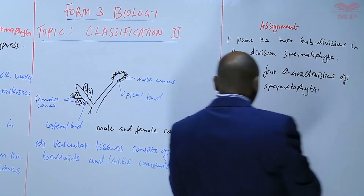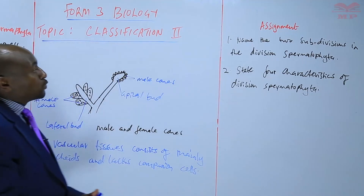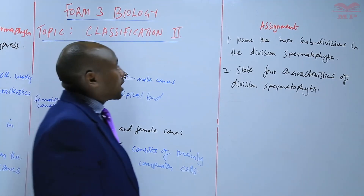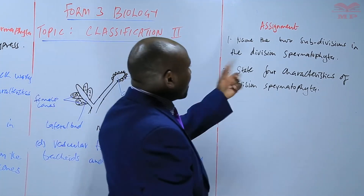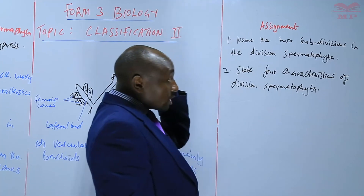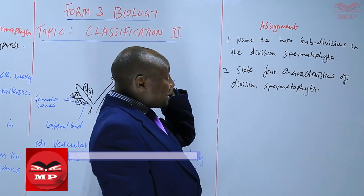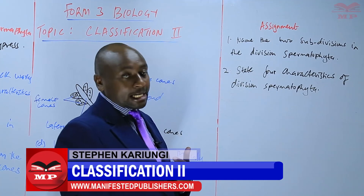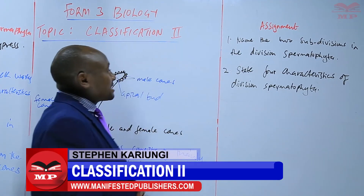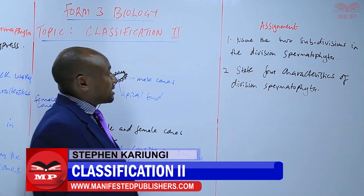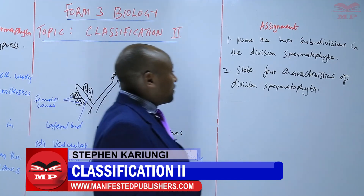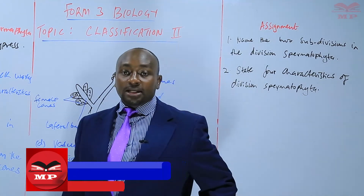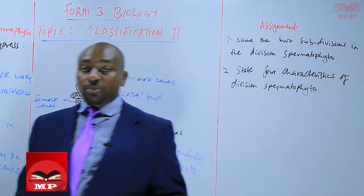Assignment: Question one — name two subdivisions in division Spermatophyta. Question two — state four characteristics of division Spermatophyta. We'll stop there until next time. Goodbye.